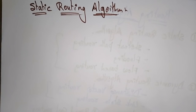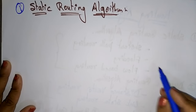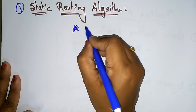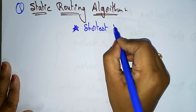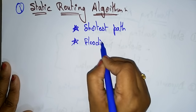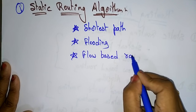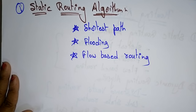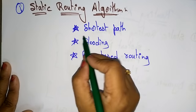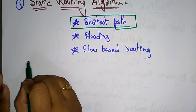Welcome back, students. Let's continue with routing algorithms. In the previous video, I showed the different routing algorithms. The first one is the static routing algorithm, which is of three types: shortest path routing algorithm, flooding, and flow-based routing algorithm. In this video, I'll explain the shortest path routing algorithm.